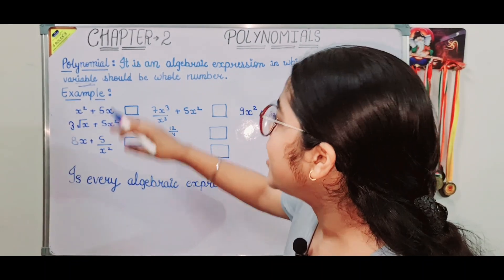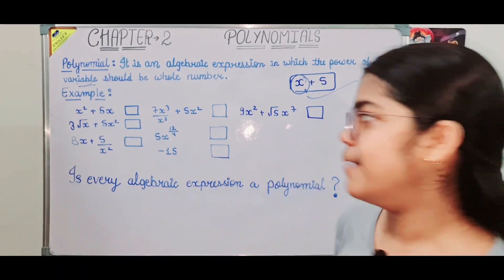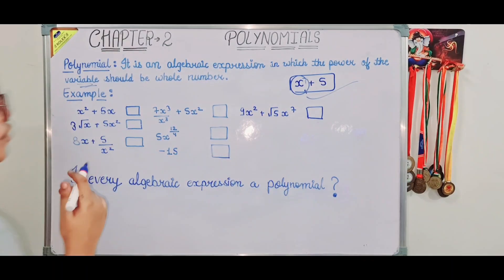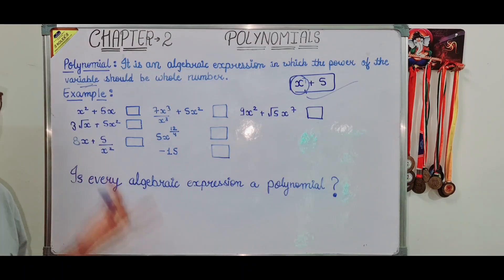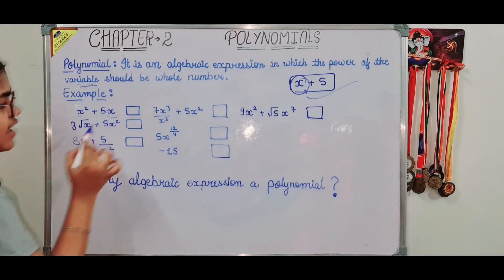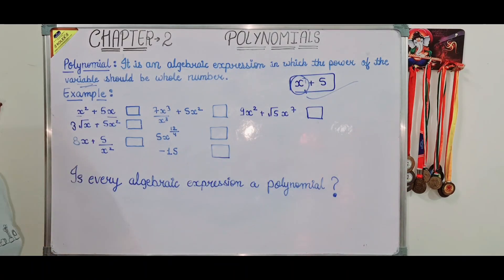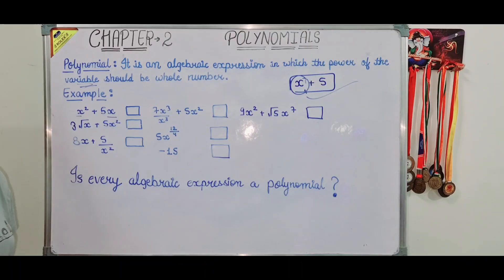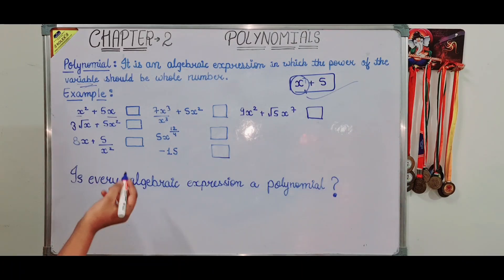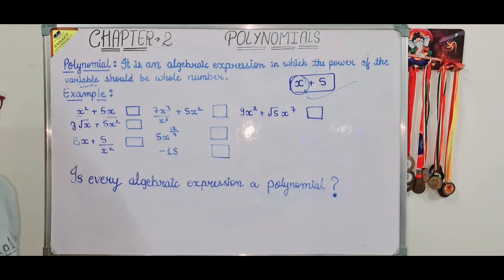Now let's see the first example. What is x squared plus 5x? Here the variable is x. The power of x is 2, which is a whole number, and the power of x in 5x is 1, also a whole number. So x squared plus 5x is a polynomial.